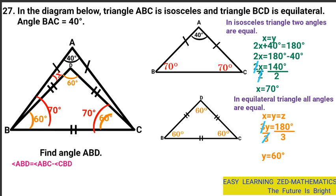Finding the value of angle ABD: angle ABC is equal to 70 degrees, and angle CBD is equal to 60 degrees. Therefore, angle ABD equals 70 degrees minus 60 degrees, which gives us 10 degrees.